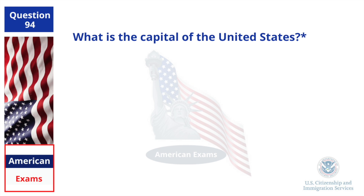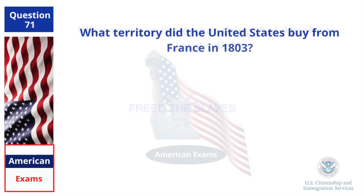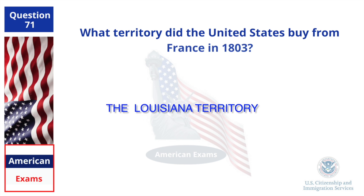What is the capital of the United States? Washington D.C. What was one important thing that Abraham Lincoln did? Freed the slaves. What territory did the United States buy from France in 1803? The Louisiana Territory.